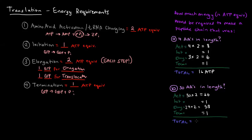So then if we add all this up to total, we get 120 ATP. So that's how much energy would cost to make a peptide chain that was 30 amino acids in length.